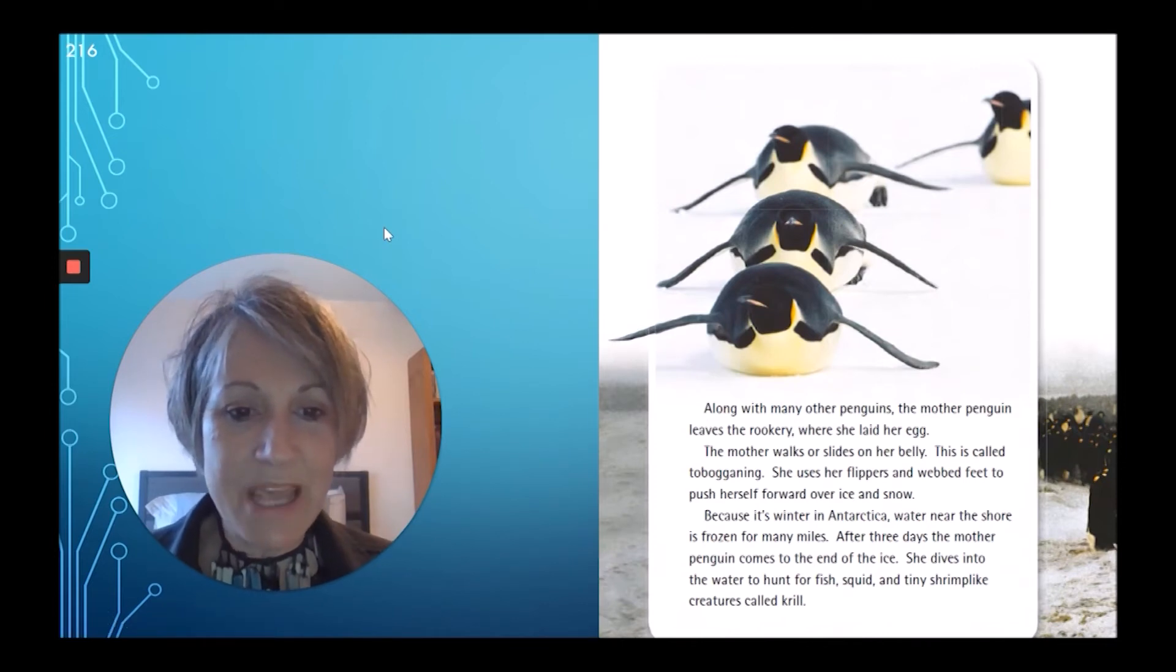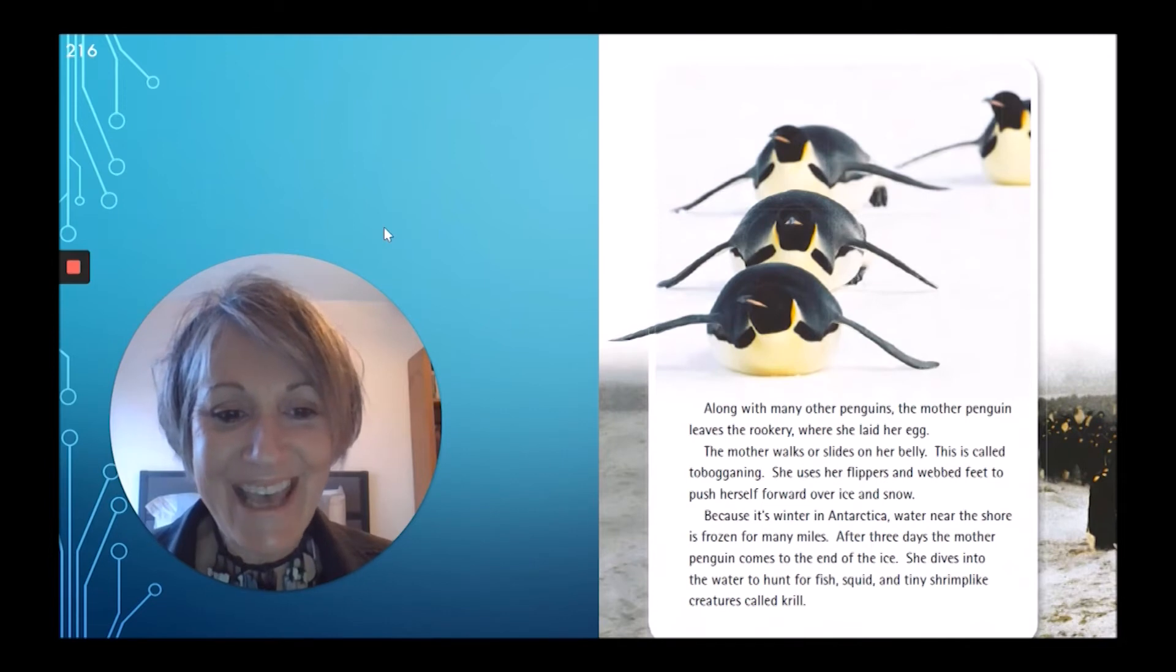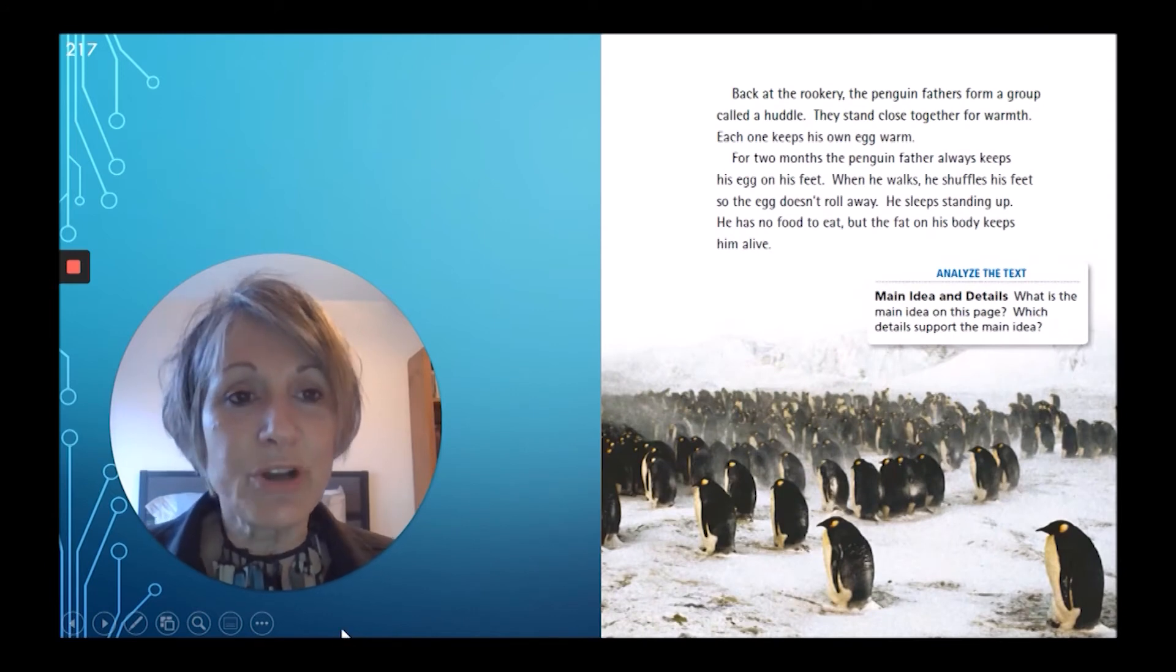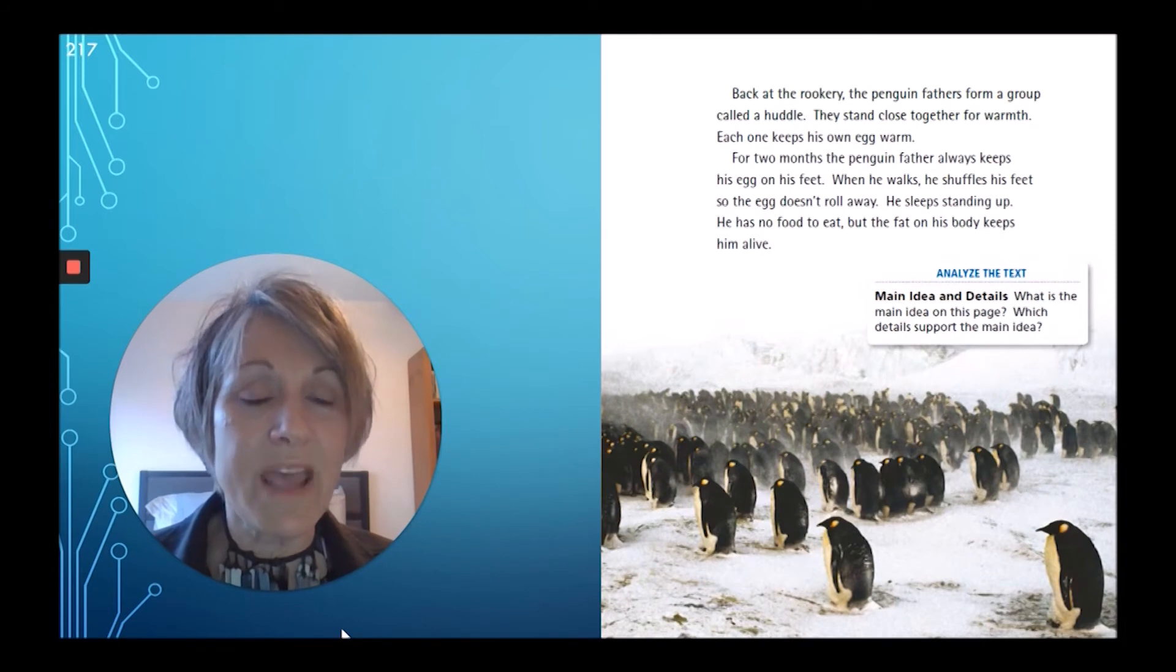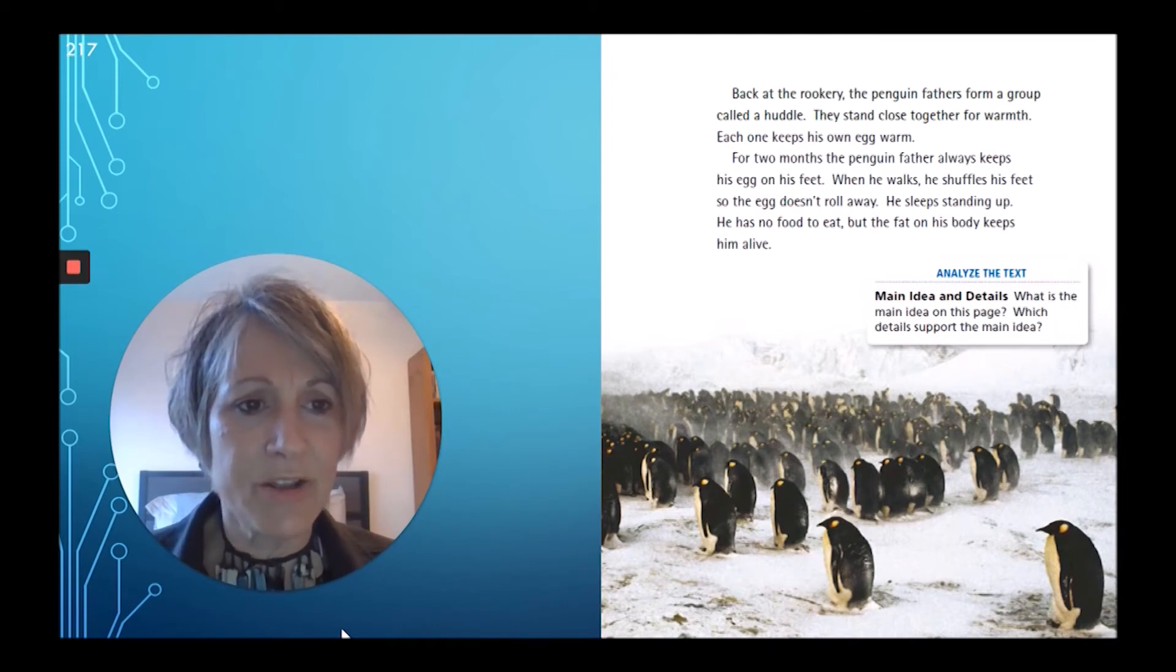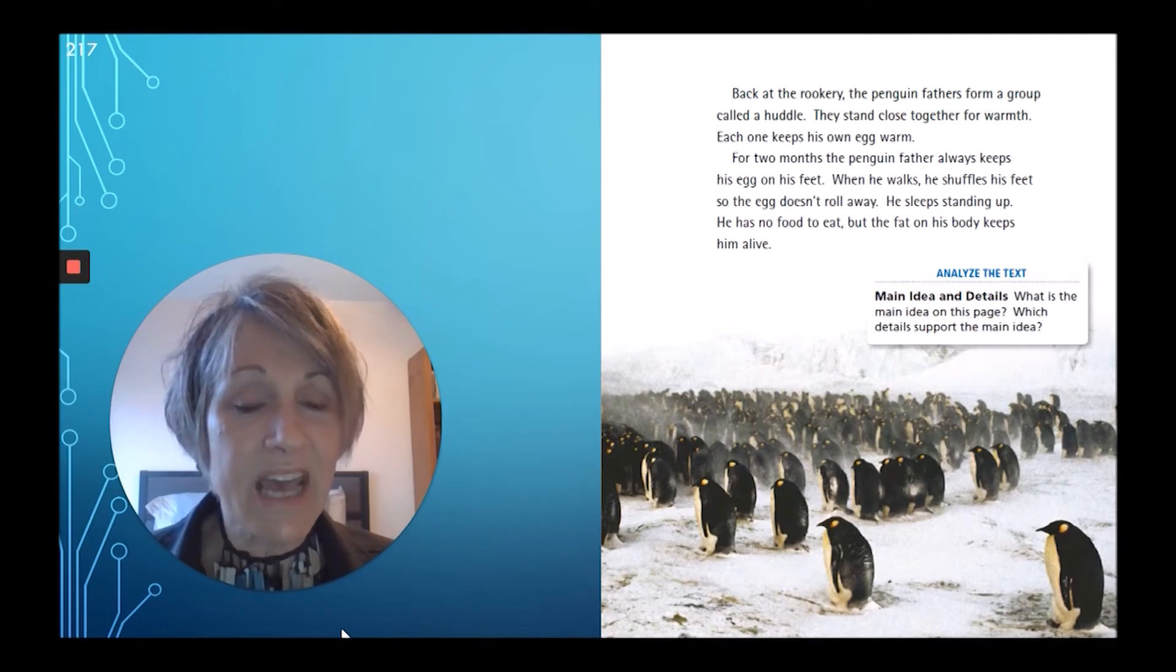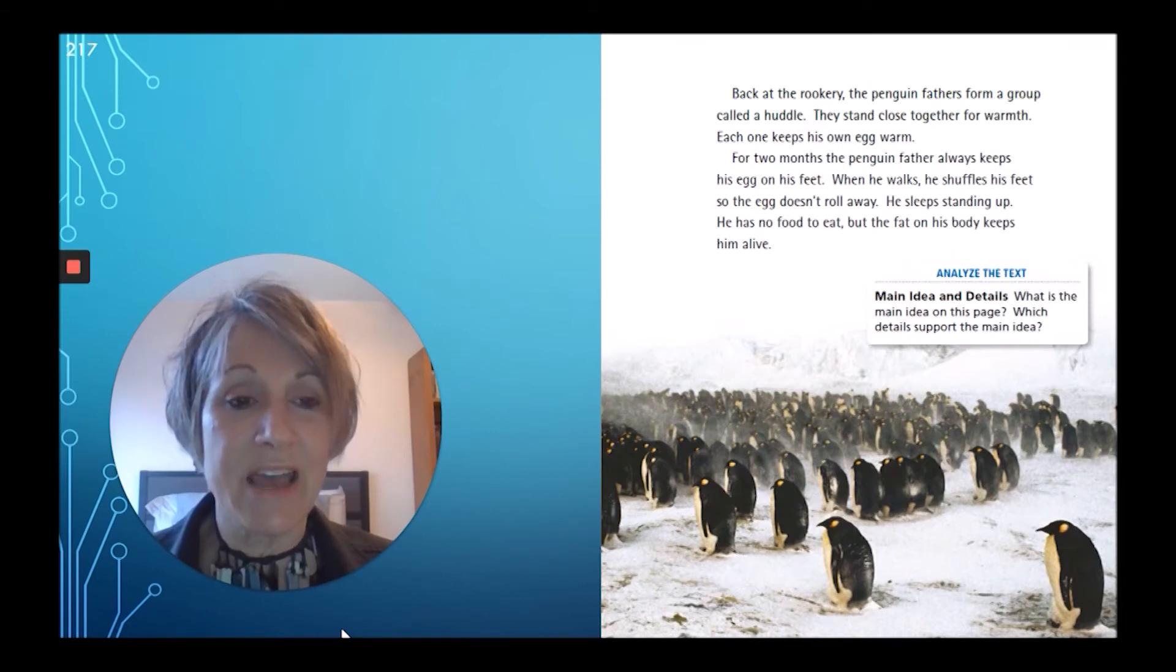Let's go back to our text now. Along with many other penguins, the mother penguin leaves the rookery where she laid her egg. The mother walks or slides on her belly. This is called tobogganing. She uses her flippers and webbed feet to push herself forward over ice and snow. Because it's winter in Antarctica, water near the shore is frozen for many miles. After three days, the mother penguin comes to the end of the ice. She dives into the water to hunt for fish, squid, and tiny shrimp-like creatures called krill. Back at the rookery, the penguin fathers form a group called a huddle. They stand close together for warmth. Each one keeps his own egg warm. For two months, the penguin father always keeps his egg on his feet. When he walks, he shuffles his feet so the egg doesn't roll away. He sleeps standing up. He has no food to eat, but the fat on his body keeps him alive. Wow, I think we need to record this.